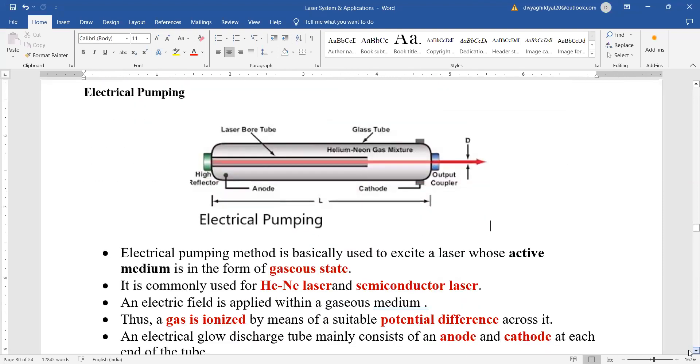As you can see here in the diagram, electrical work is coming from a potential difference which we will be giving with the help of anode and cathode. Here in the laser, this is used in helium neon laser and semiconductor laser. Electrical pumping method is basically used to excite a laser whose active medium is in the form of a gaseous state.